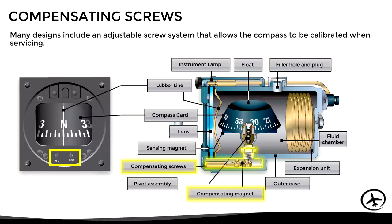This is an adjustable screw system that allows the compass to be calibrated when servicing while on the ground. It should be clarified that these should not be adjusted by the pilot as they should only be handled by maintenance personnel in an authorized workshop, since the purpose of this system is to compensate for certain errors caused by compass deviation.